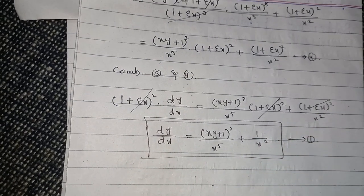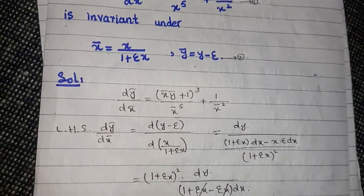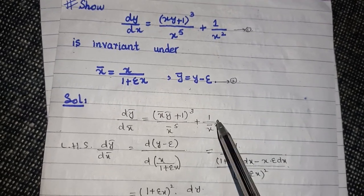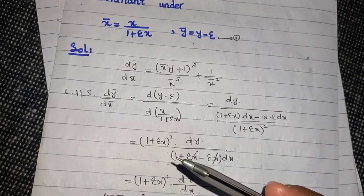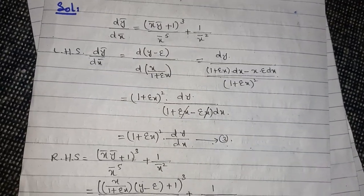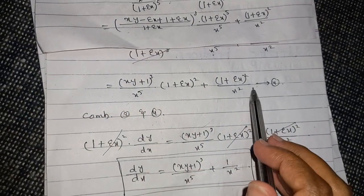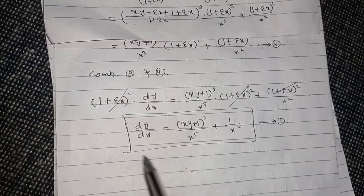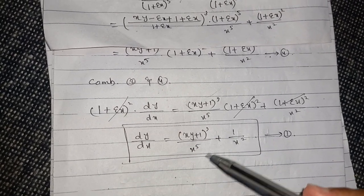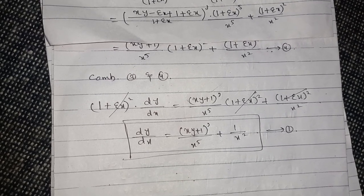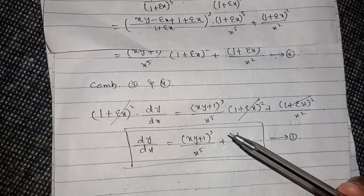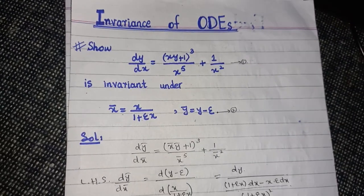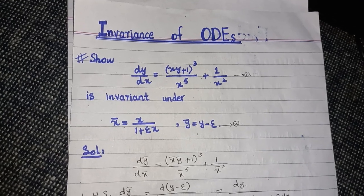This is exactly the original equation number one. We applied the transformation to the original differential equation, computed the left-hand side and right-hand side separately, and combining both we see the transformed equation is identical to equation one. Therefore, the given ordinary differential equation is invariant under the given transformation. This is what invariance means: if you apply the transformation and recover the original equation, the ODE is invariant. This is your desired result.